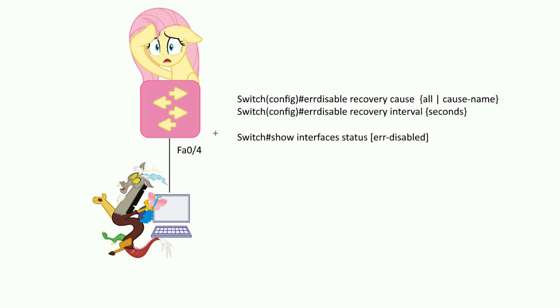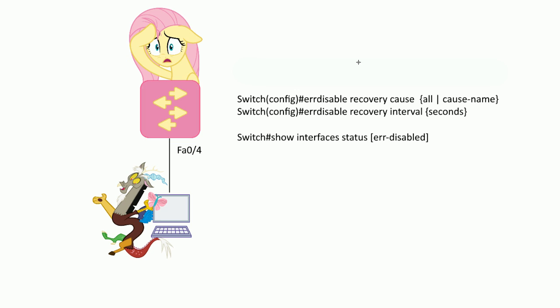The issue is that Discord has been doing this often, putting his port in an error-disabled state quite a few times. What Fluttershy has to do is come in, go to the port, and do a shutdown followed by a no-shutdown to re-enable the port, which is a pain. So instead of her doing it manually, why not just let the switch do it automatically?